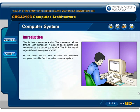This is how a computer works. The information will go through each component in order to be processed and developed as the output you require. This is the overall organisation of a computer process. In this topic, we will look in detail at the computer components and its functions in the computer system.